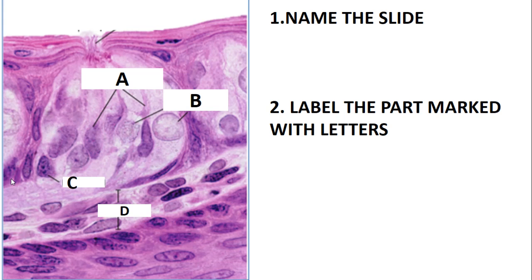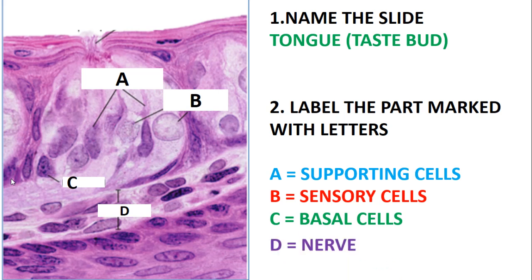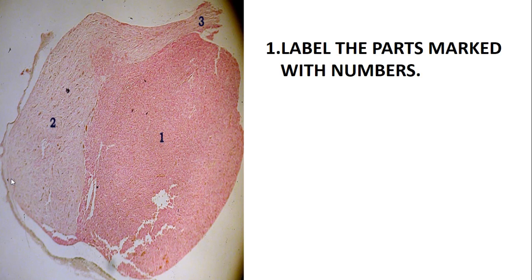This slide is from the tongue and we are focused on the taste part. In part 1 of system histology I explained features such as the gustatory receptor cells found in the taste buds, but this time we are looking in a bit more detail at other content found in the taste part. Label the parts marked with letters: A is the supporting cells, B is the sensory cells, C is the basal cells, and D is the nerve.